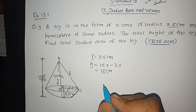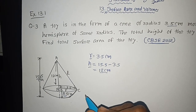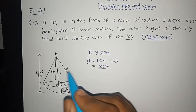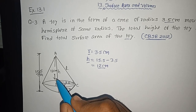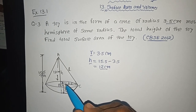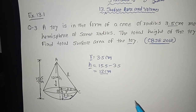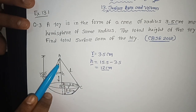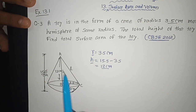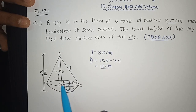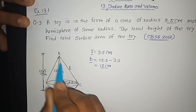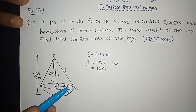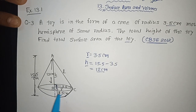Now we have to find out the total surface area of the given toy. There are two figures in this toy — one is the cone and one is the hemisphere. The surface area of the conical part is π r l, and the surface area of the hemisphere is 2πr². First, we need to find the slant height L. In the figure, I have marked triangle ABC as a right-angle triangle.